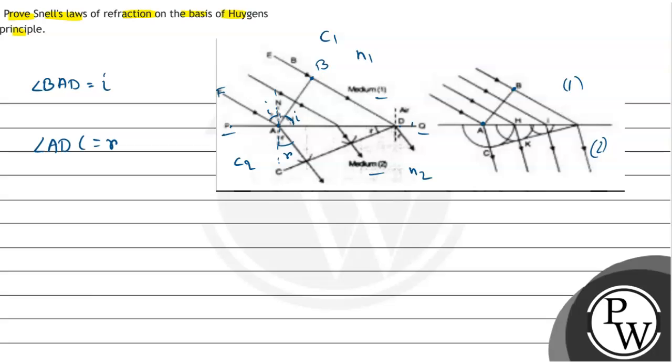Let us consider triangle BAD. We can get here that sin I is equal to sin BAD. Sin BAD means BD height upon hypotenuse AD. And actually, BD is C1, the velocity of the light in medium 1. So it will be C1T divided by AD.